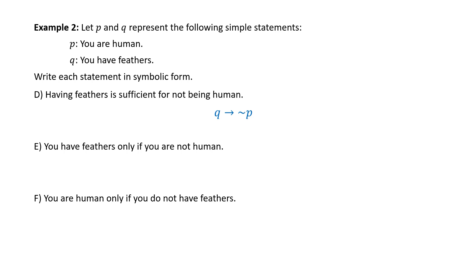Part E: 'You have feathers only if you are not human.' 'If you are not human' is the hypothesis. If P is 'you are human,' then not human is ∼P. Symbolically, we write ∼P → Q.